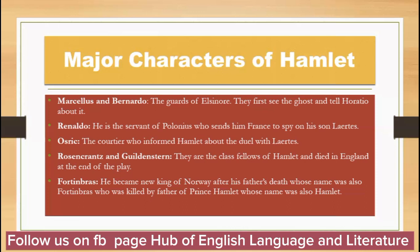Claudius sends messengers to the uncle of young Fortinbras, asking him to stop his nephew from attacking Denmark. The old Fortinbras had been killed by Hamlet's father, and now young Fortinbras wants to reclaim those lands. Claudius's messenger convinces Fortinbras's uncle, who stops him. As a result, Fortinbras will attack Poland instead of Denmark.